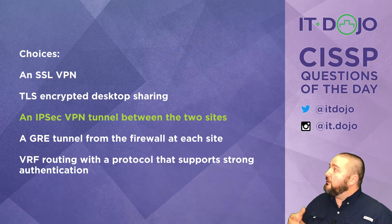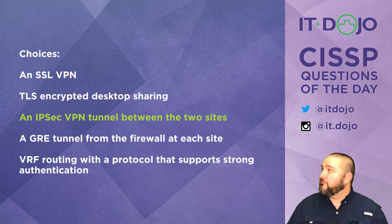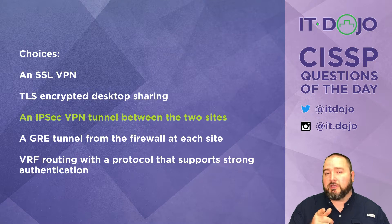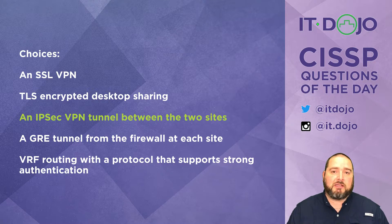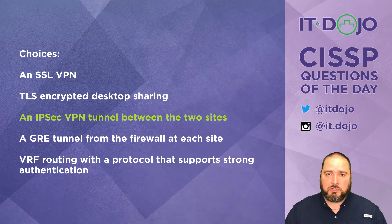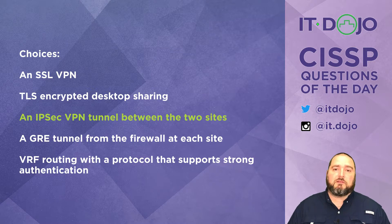The fourth option says you could use a GRE tunnel between the firewalls at each site. While that's not completely out of the question, the real issue is that GRE does not provide any confidentiality services natively. It would require something else to be done. Since the question requires seamless and secure connectivity, IPsec is a better solution than GRE in that regard.